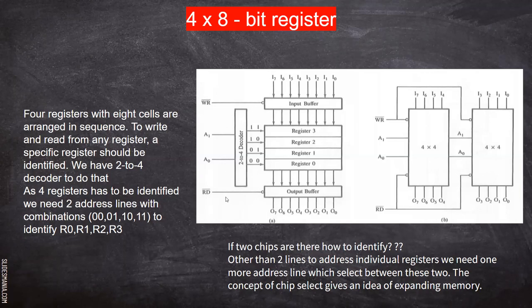Here also, RD bar — when you give a zero, it gets converted by this bubble inverter and the output buffer will be enabled. That's why they work on low signals.